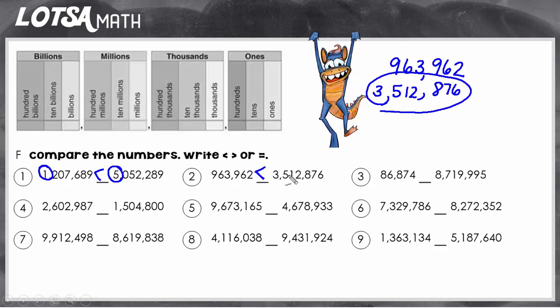So I'm using the symbol to open to the bigger number and it's read nine hundred and sixty three thousand nine hundred sixty two is less than three million five hundred and twelve thousand eight hundred and seventy six.